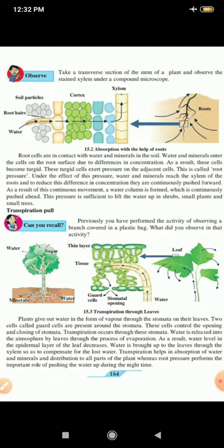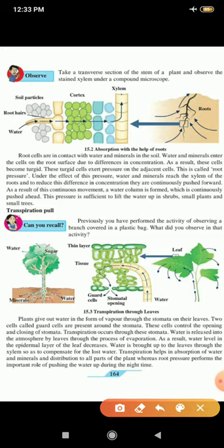Transpiration helps in absorption of water and minerals and distribution to all parts of the plant, whereas root pressure performs the important role of pushing the water up during the night time. Look at the figure here. A small section of the leaf is taken where you can see the guard cells. The adjoining cells are guard cells, and that opening is called as a stomatal opening. Water is taken up here and water evaporates through the stomatal opening. You can see the thin layer of epidermal cells there. In the first picture, you can see the minerals are taken up by the roots, and water is also taken up. Sugar is formed and produced. Water is evaporated. This is called as transpiration pull.